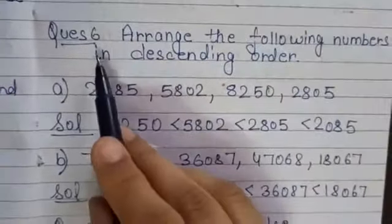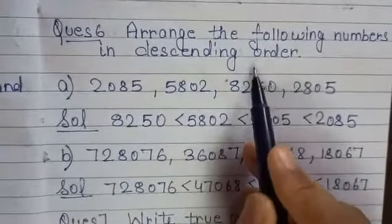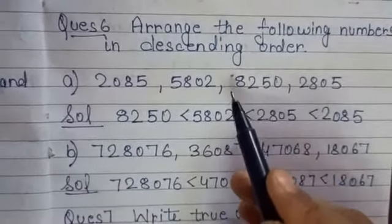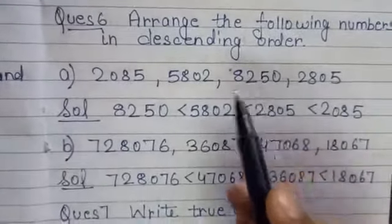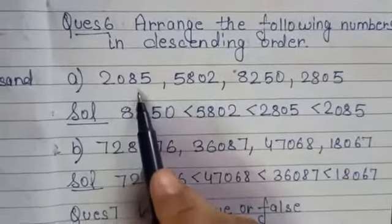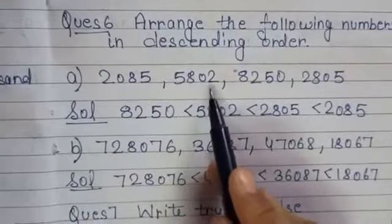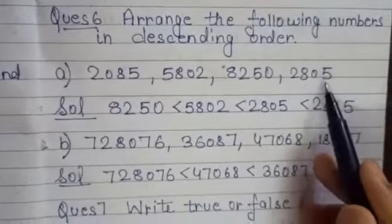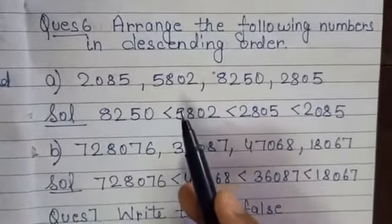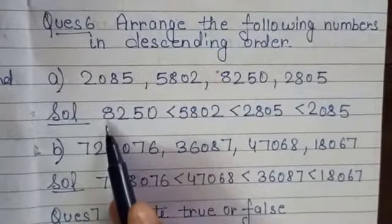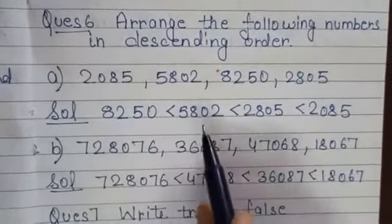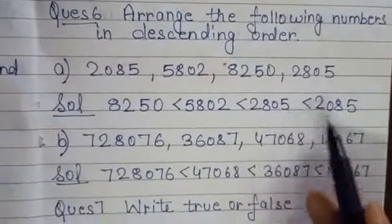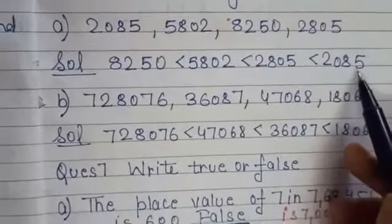Question 6: arrange the following numbers in descending order — greatest to smallest. Part A: 2,085; 5,802; 8,250; 2,805. In descending order: 8,250 then 5,802 then 2,805 then 2,085.